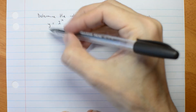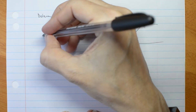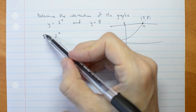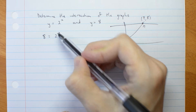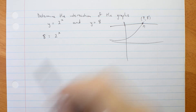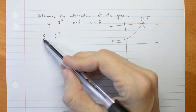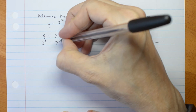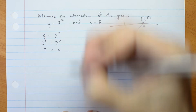So, y equals 2 to the x and y equals 8. Well, can I write 8 as 2 to the power of something? If you get stuck, you can take a logarithm if you remember how to do the change of base rule for logs. I'm not sure whether you've done logs in the Year 10 Specialist Maths Taster, so I'm not going to do that — I'm just going to guess. 2 to the power of what gives me 8? It's 2 to the power of 3 that gives me 8, and therefore x must be 3.